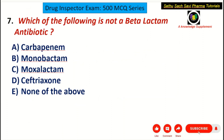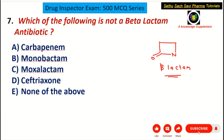Coming to the second question of the day: which of the following is NOT a beta-lactam antibiotic? A choice: carbapenem, B choice: monobactam, C choice: moxalactam, D choice: ceftriaxone, E choice: none of the above. First, you need to know what a beta-lactam antibiotic is. Beta-lactam antibiotics contain the beta-lactam ring — a carbonyl group attached to a nitrogen, separated by two carbon atoms.